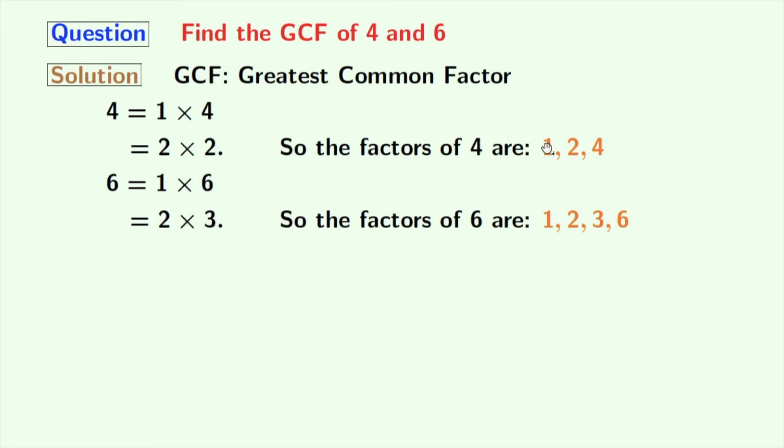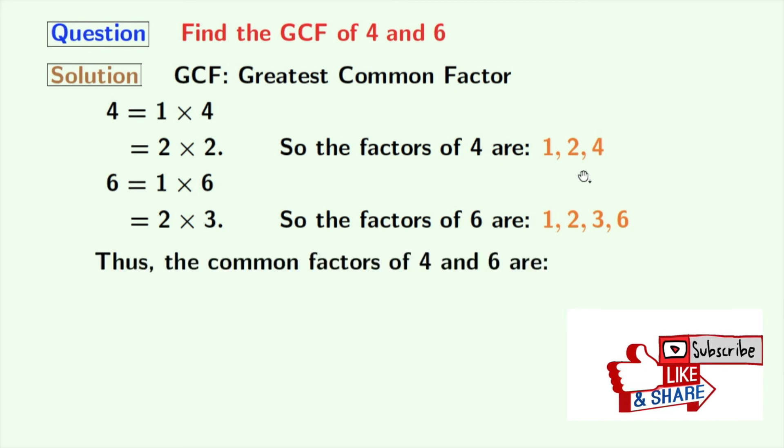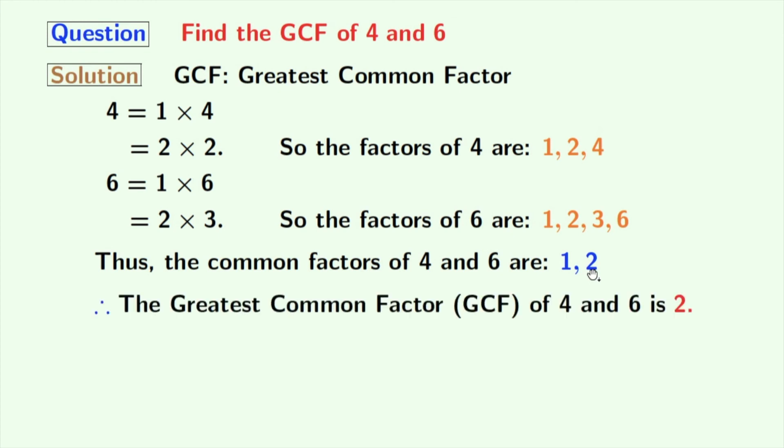Now, look at these orange numbers. These are the factors of 4 and 6. Now, can you find the common factors? Look that the common factors of 4 and 6 are 1 and 2. Now, if we check these common factors, we can see that 2 is the greatest one.